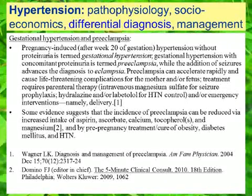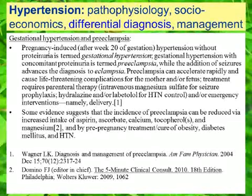Some evidence suggests that the incidence of preeclampsia can be reduced by increased intake of aspirin, ascorbic acid (vitamin C), calcium, tocopherols (vitamin E), and magnesium. Pre-pregnancy treatment and/or cure of diabetes, obesity, and hypertension may also reduce incidence.